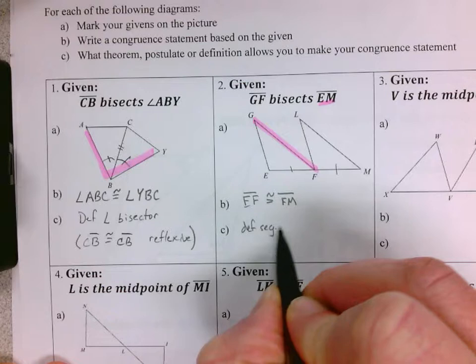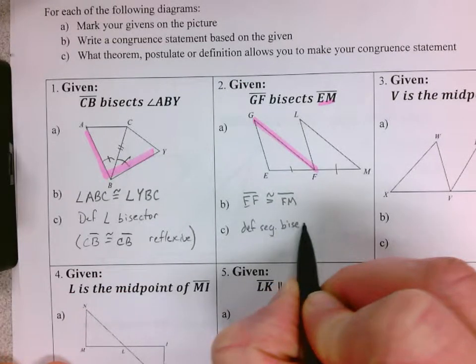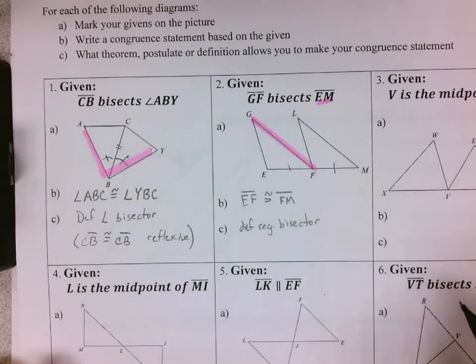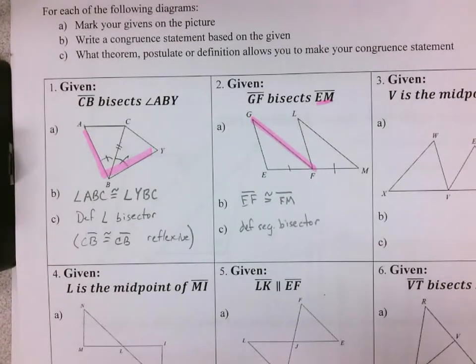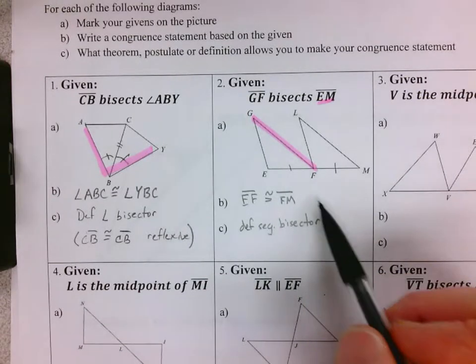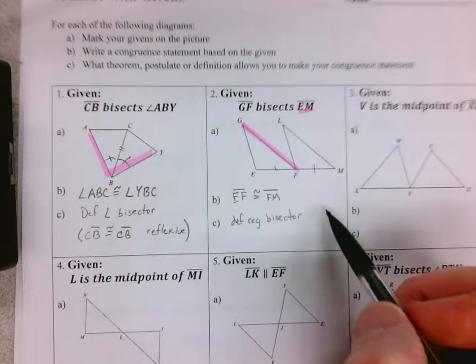And the reason is definition of a segment bisector. Your teacher might just let you write bisector as well. So there's a segment bisector, and so that would say further, if you were looking to conclude here, F is the midpoint of EM because of that information.